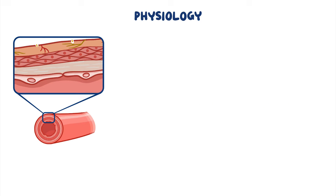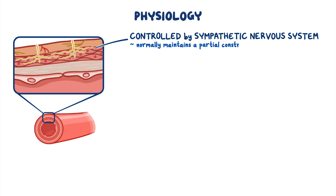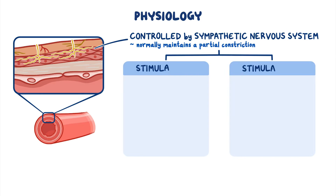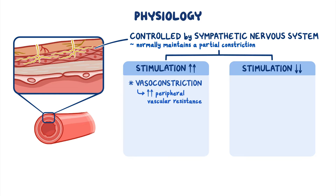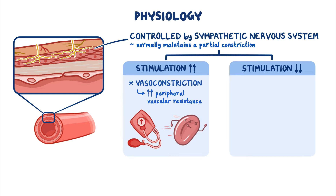The contraction and relaxation of smooth muscles are primarily controlled by the sympathetic nervous system, which normally maintains a partial constriction, generating enough force to keep blood moving through the circulatory system. The sympathetic system stimulation can increase or decrease to keep up with the body's needs. Increased sympathetic stimulation causes vasoconstriction and increases peripheral vascular resistance. In contrast, vasodilation is typically caused by decreased sympathetic stimulation, in addition to inflammatory cytokines and histamine, which decrease peripheral vascular resistance.